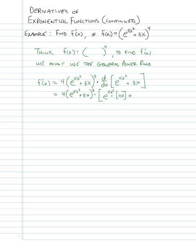Then we have plus 3x. When taking the derivative of things added together, we add the derivatives. The derivative of 3x is just 3. Just to clarify — that 10x is the derivative of the power, that's where the 10x came from.